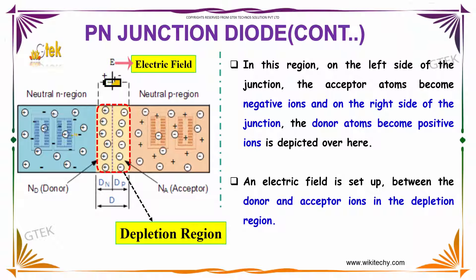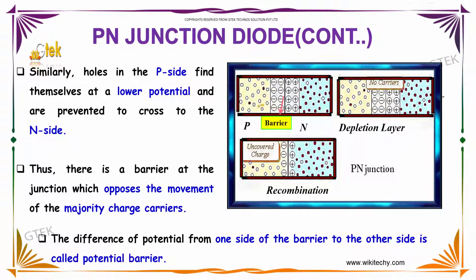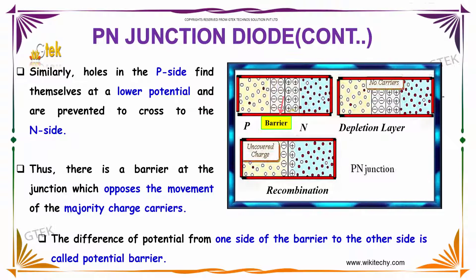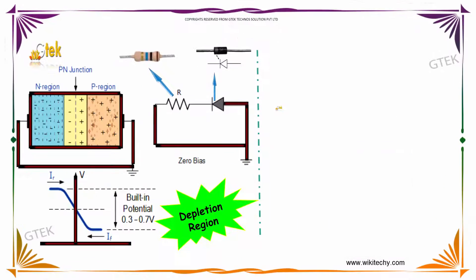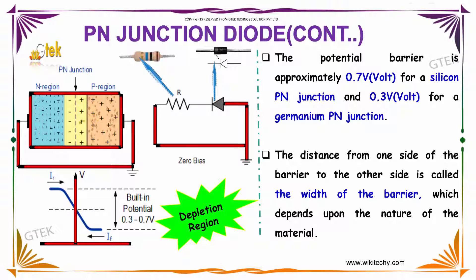In this region, on the left side of the junction, the acceptor atoms become negative ions. On the right side of the junction, the donor atoms become positive ions. An electric field is set up in between the donor and acceptor ions in the depletion region. Thus, there is a barrier at the junction which opposes the movement of the majority charge carriers. The difference of potential from one side of the barrier to the other side is referred to as potential barrier. The potential barrier is approximately 0.7V for silicon and 0.3V for germanium.